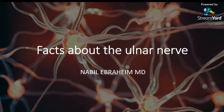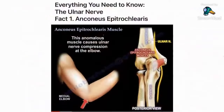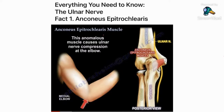Tonight, we're going to be talking about facts related to the ulnar nerve. The ulnar nerve has many important facts. One of the facts is the causes — the Anconeus Epitrochlearis is a cause for ulnar nerve compression. The most common cause is compression between the two heads of the flexor carpi ulnaris, but there are many other causes.